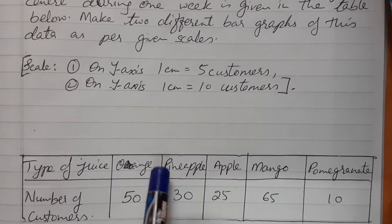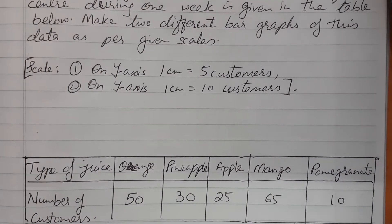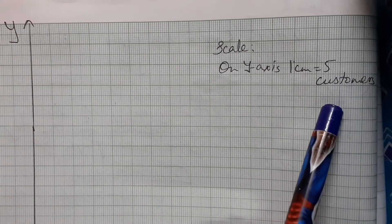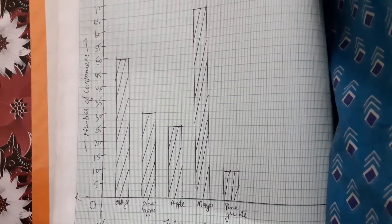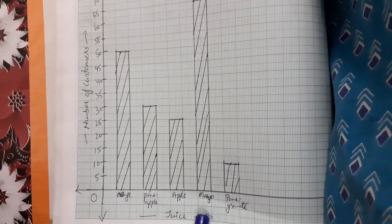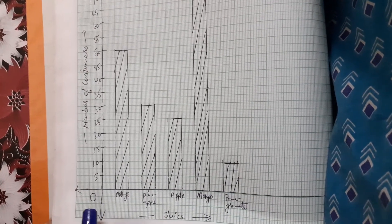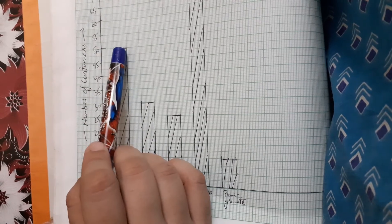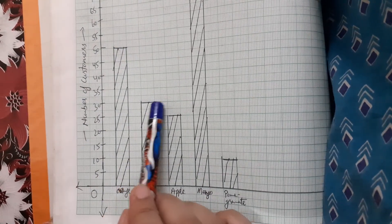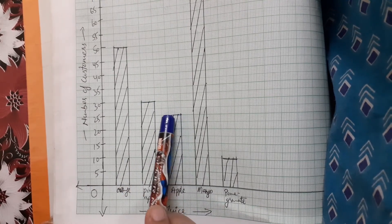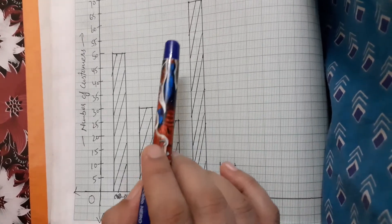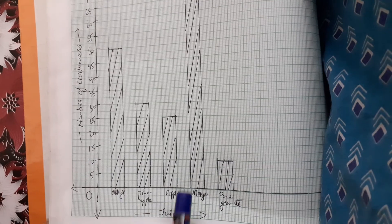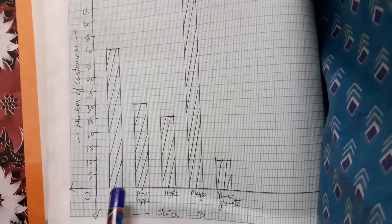The information given is the type of juice and the number of customers. On the first graph the y-axis has 1 cm equal to 5 customers. On the x-axis we have taken the names of the juices, and on the y-axis the number of customers. Orange is 50, pineapple is 30, apple is 25, mango is 65, and pomegranate is 5. We mark each value and join the markings with the x-axis to complete the bar graph.